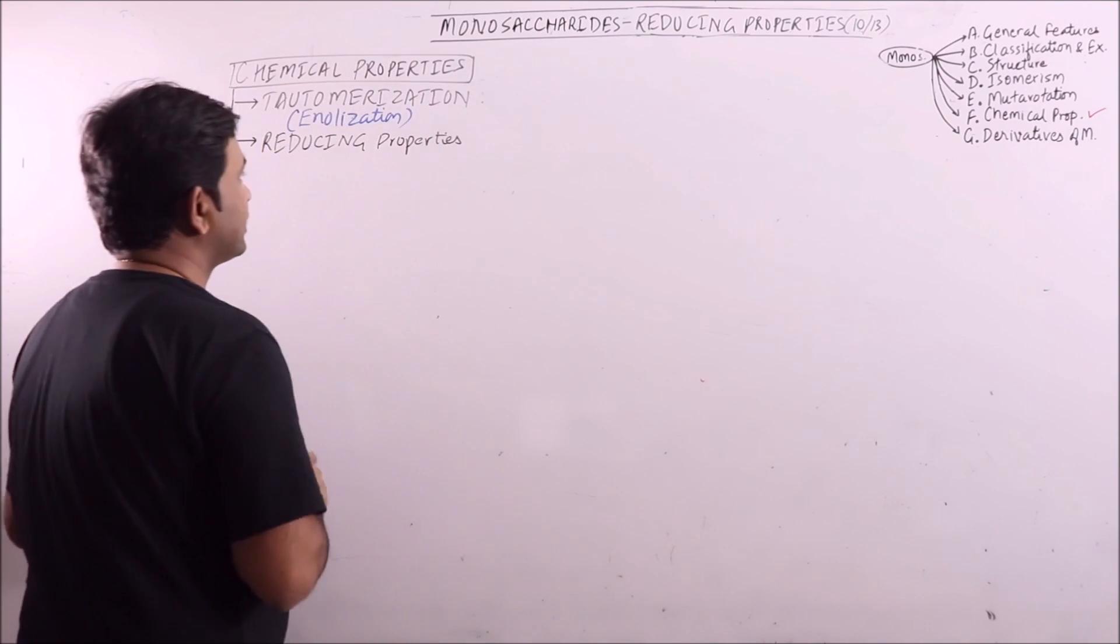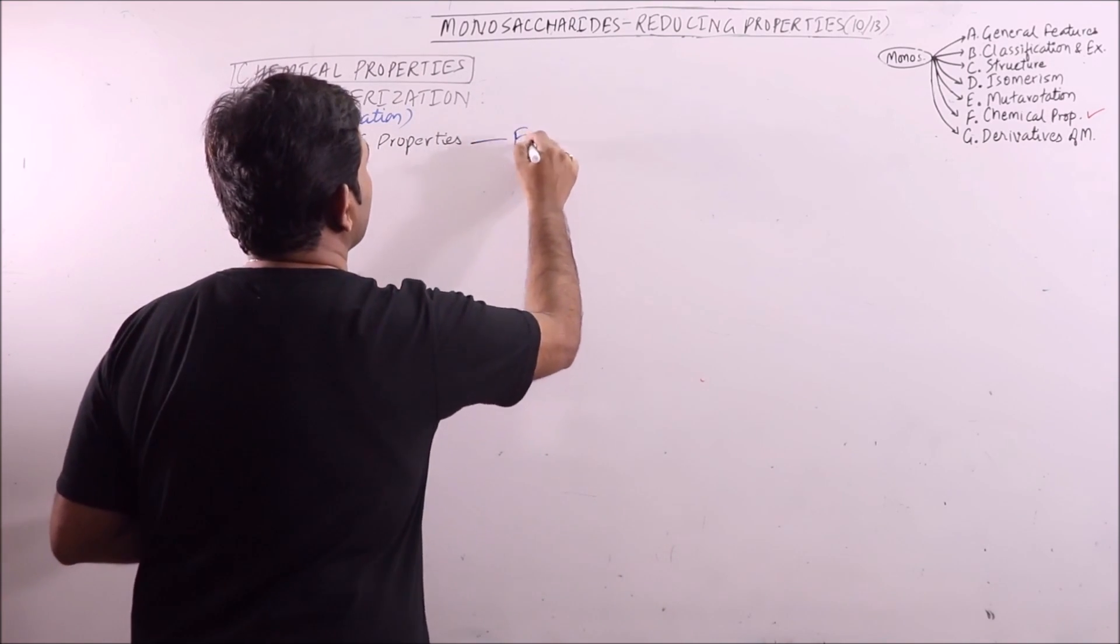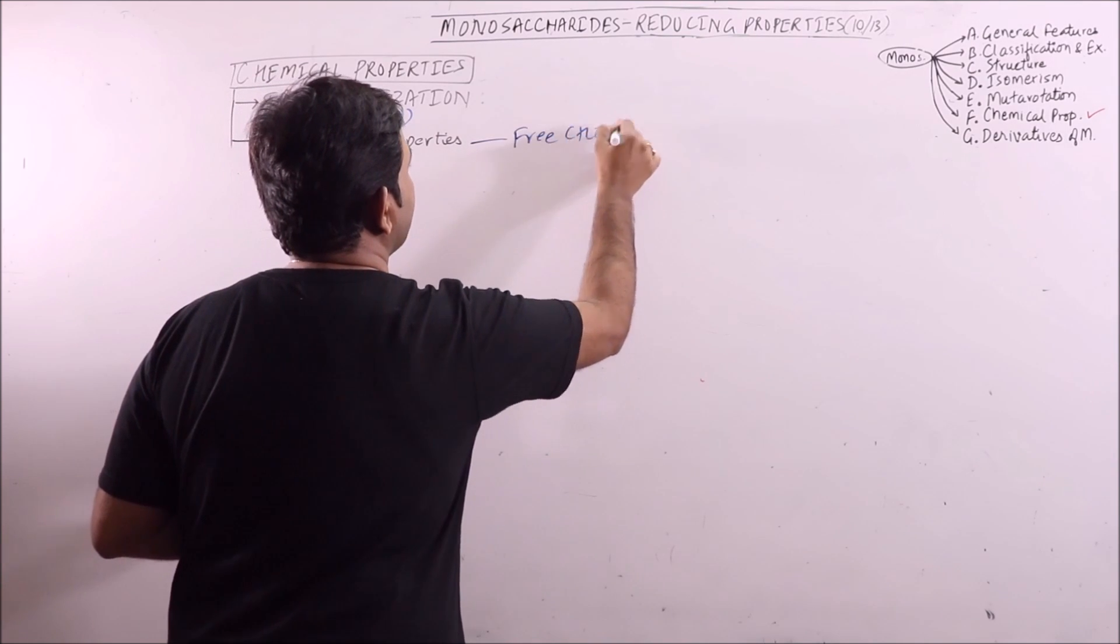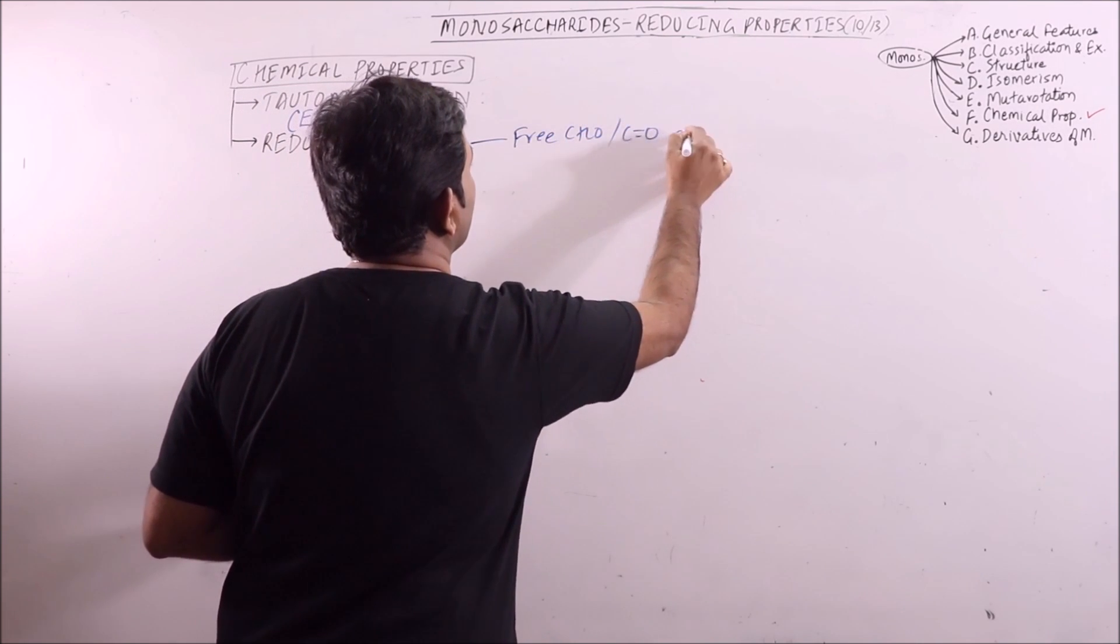The reducing properties of monosaccharides is because of free aldehyde or ketone group.